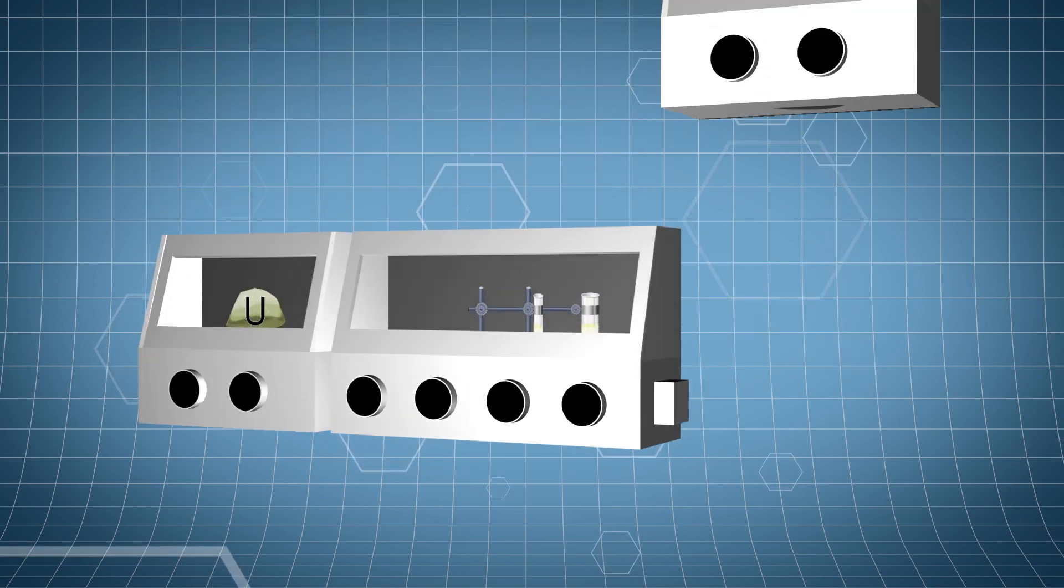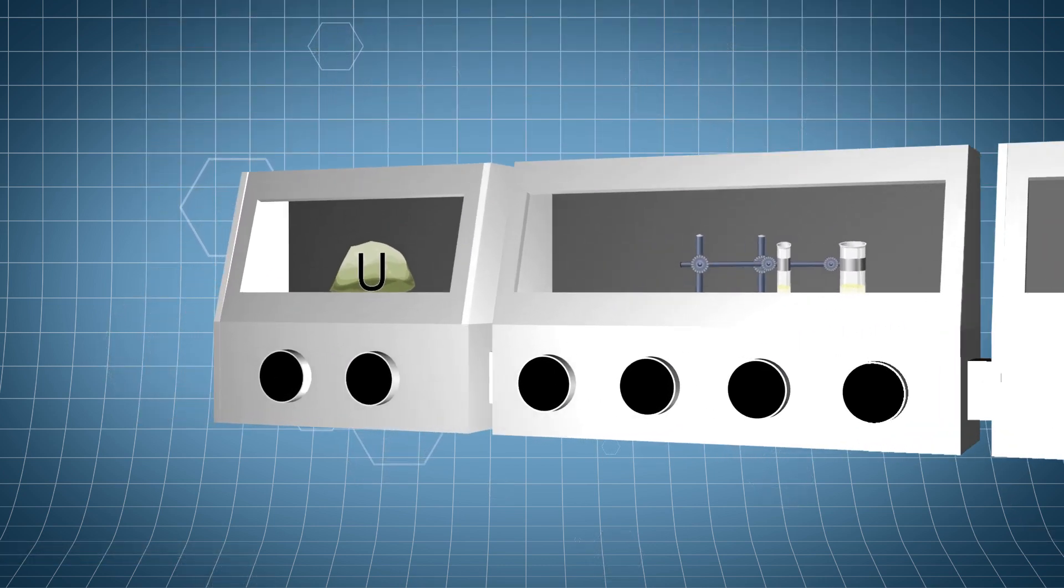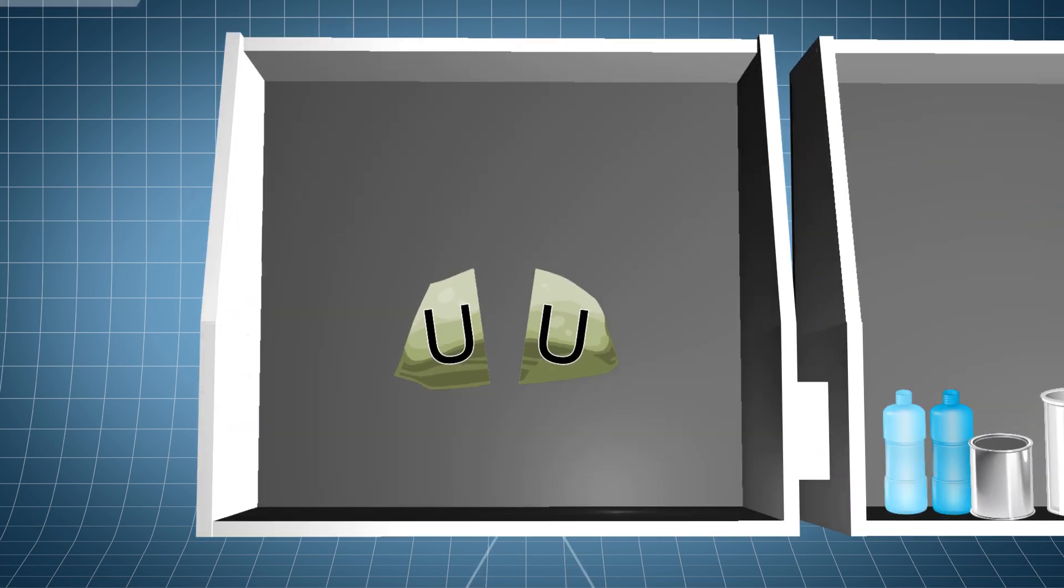There are three glove boxes, all connected to each other. Uranium is delivered to glove box 1 and divided into samples. Then a sample is moved to glove box 2.